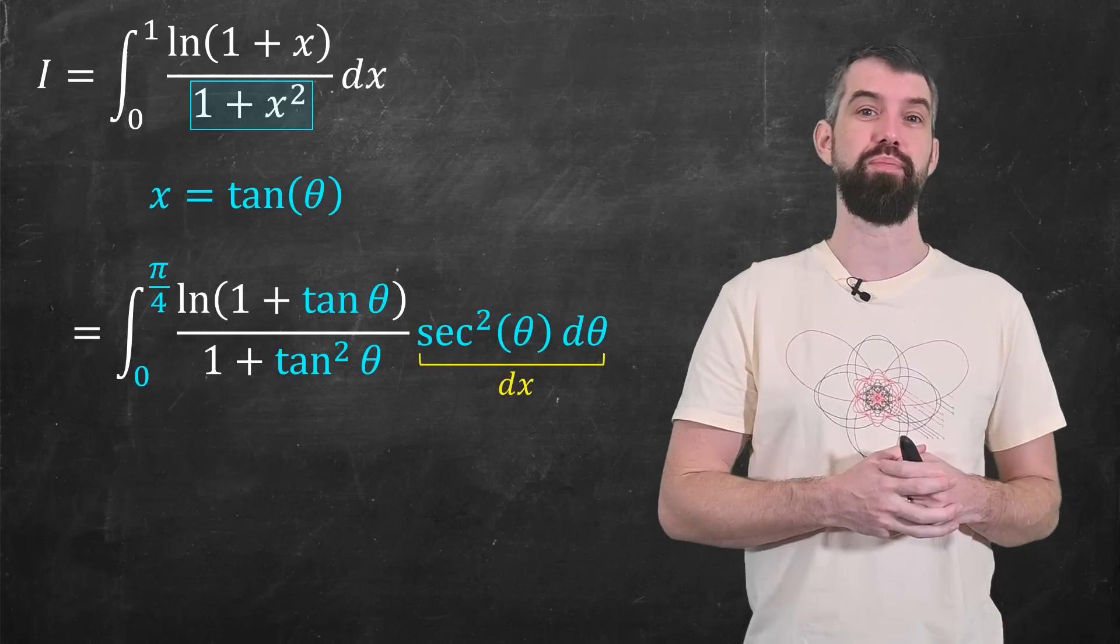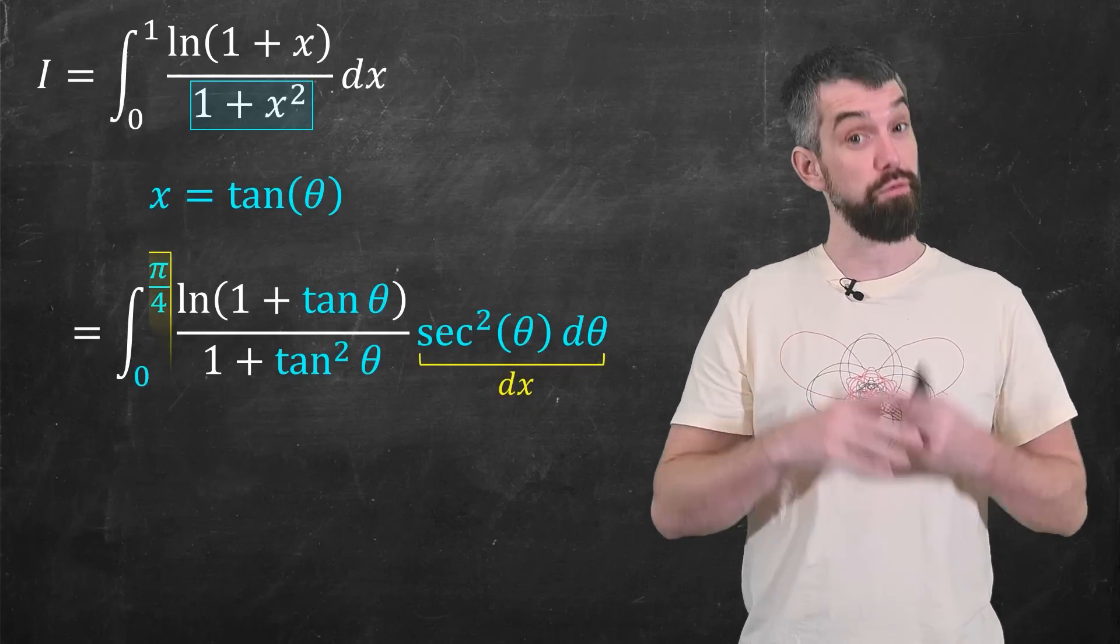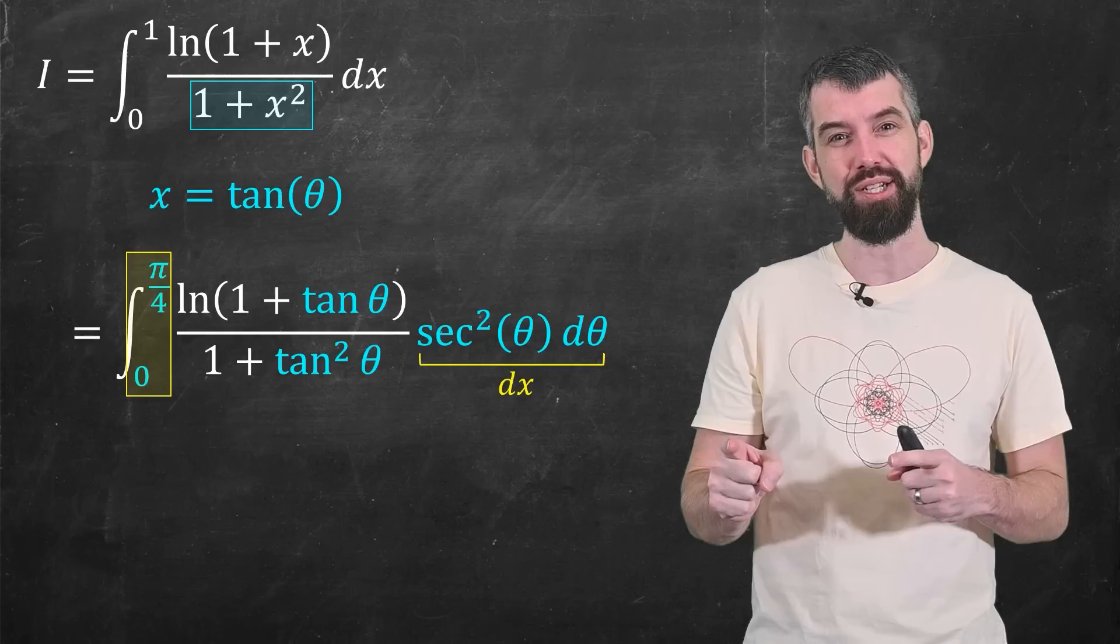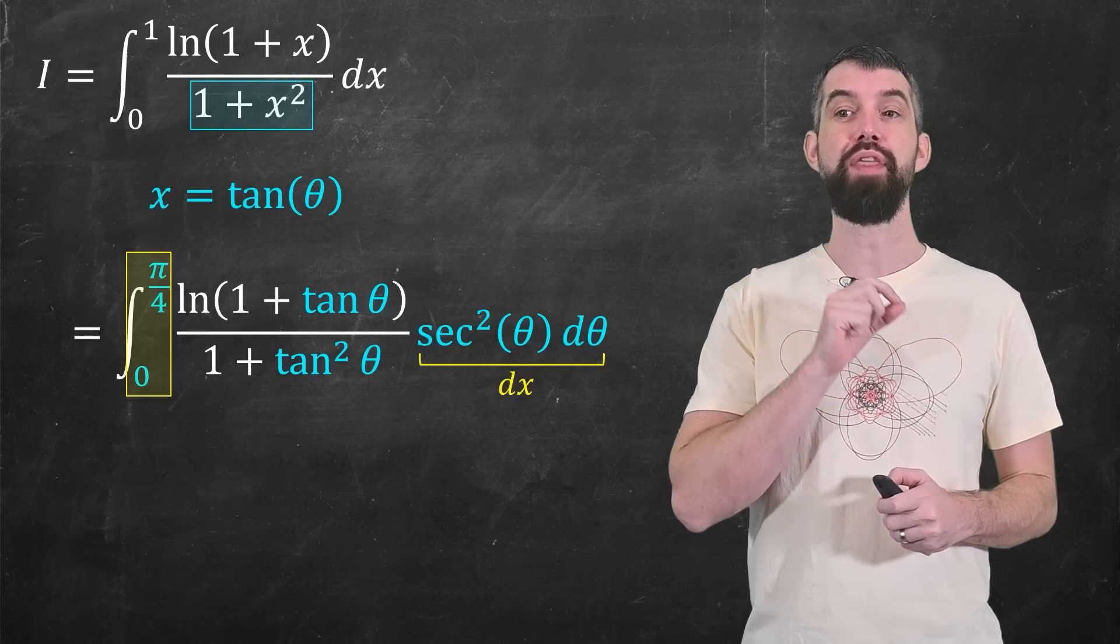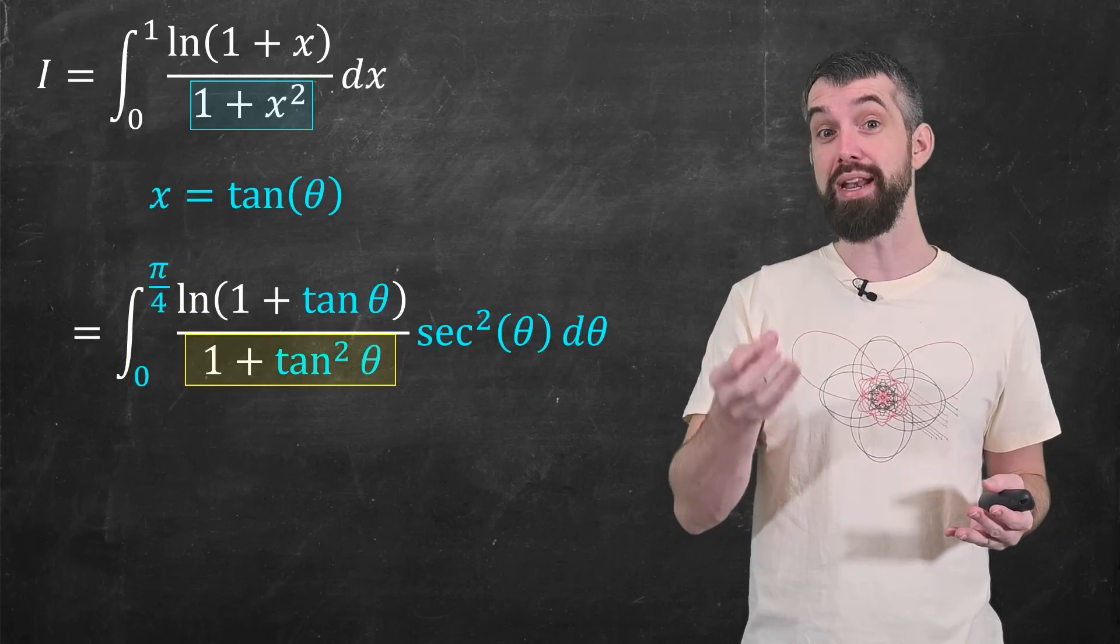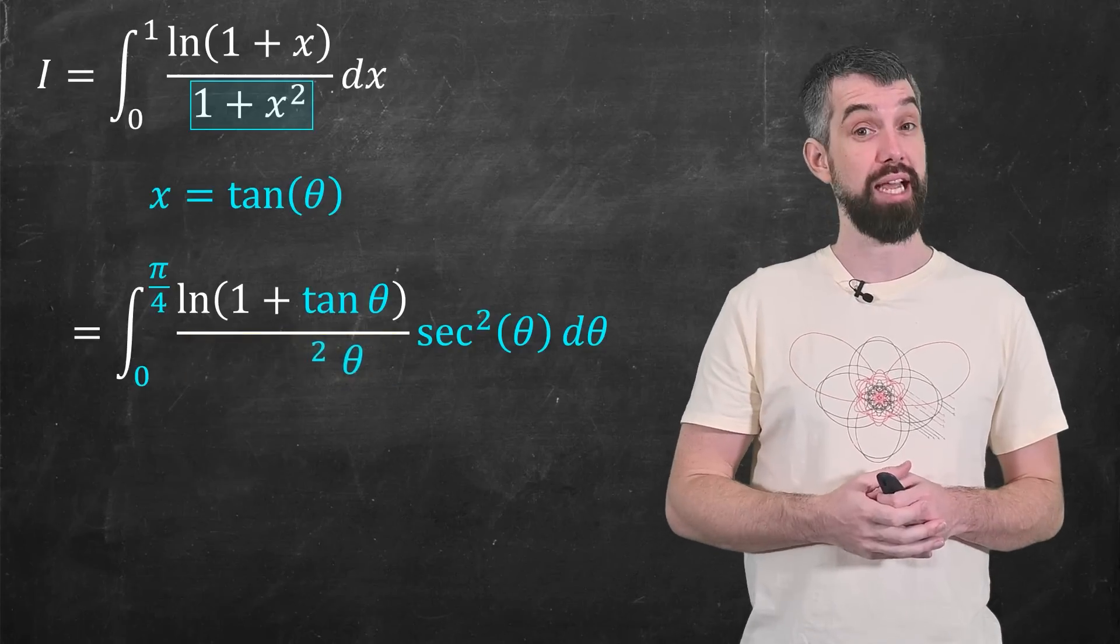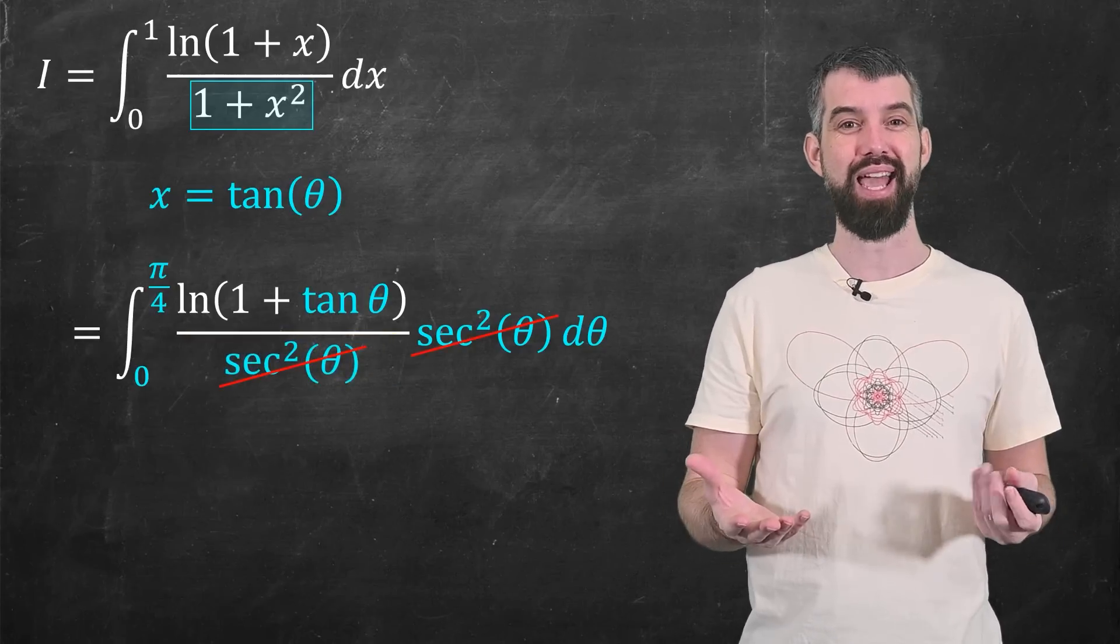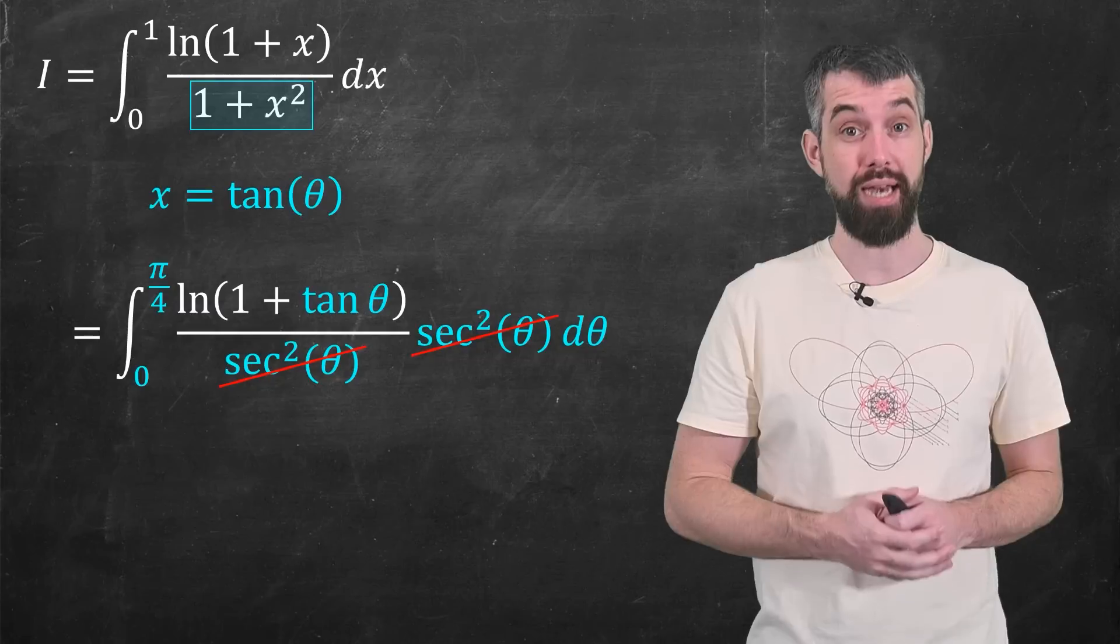So I plug tan in everywhere here. Don't forget your dx has to change. The derivative of tan is secant squared. Don't forget your limits of integration have to change. But my focus is on that denominator. That's the whole reason for doing this. 1 plus tan squared, I now use that Pythagorean identity. This is nothing but secant squared. Now the secant squareds cancel, and it simplifies out really nicely.